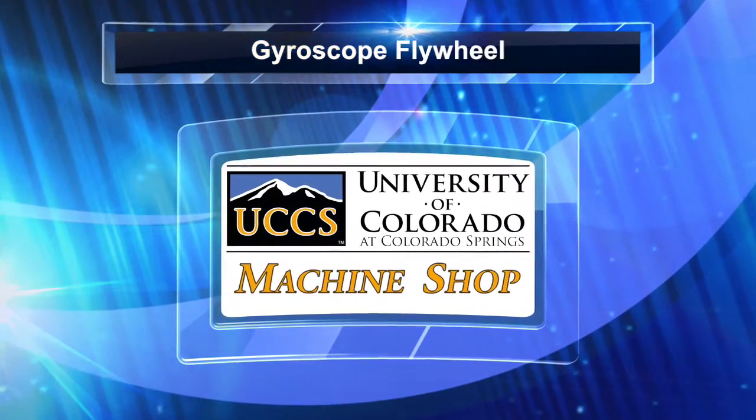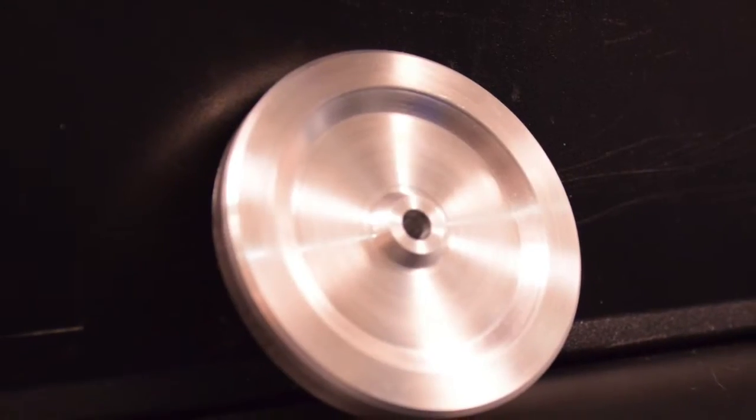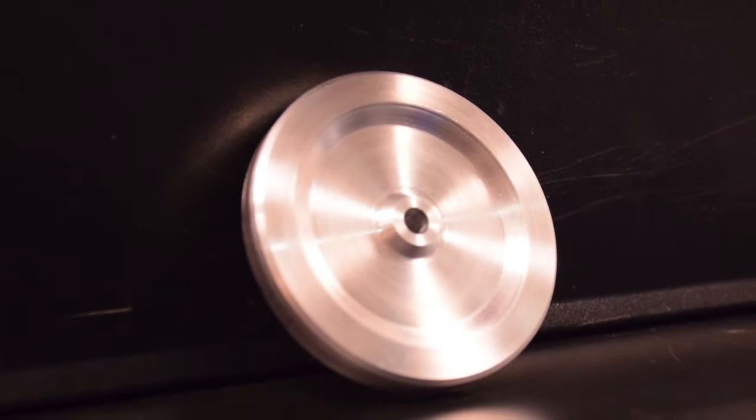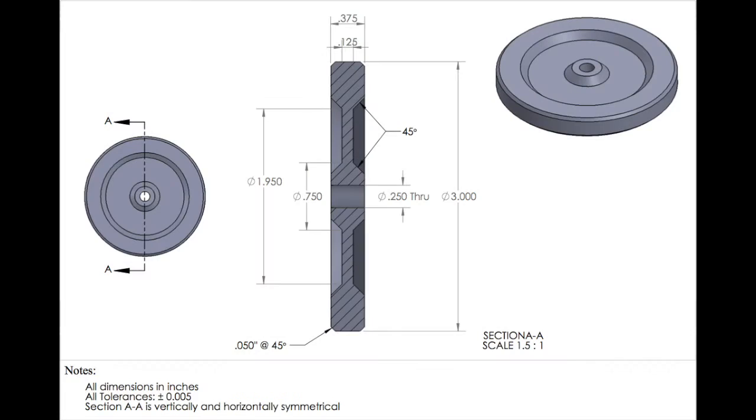Welcome to another UCCS Machineshop video. Today we will be making a flywheel for your gyroscope. Here is a parts diagram of the flywheel.